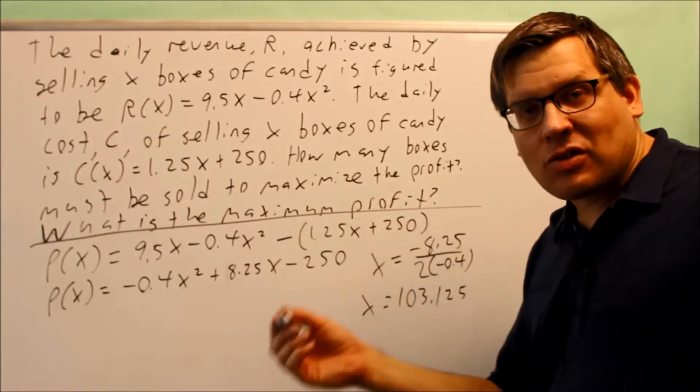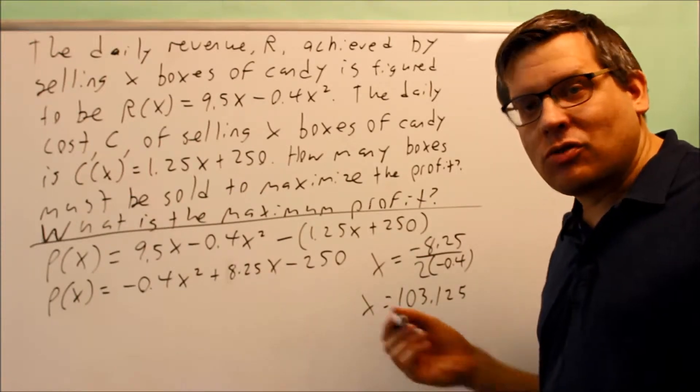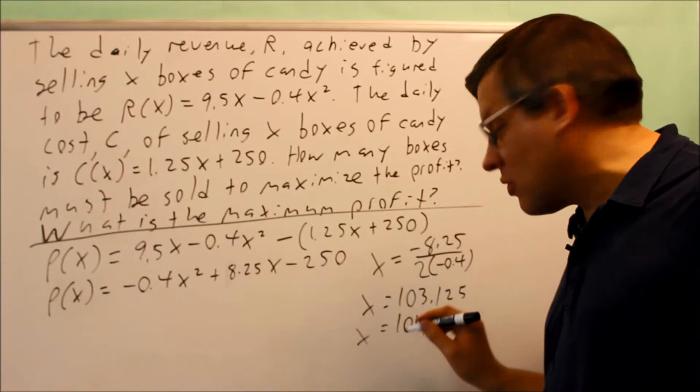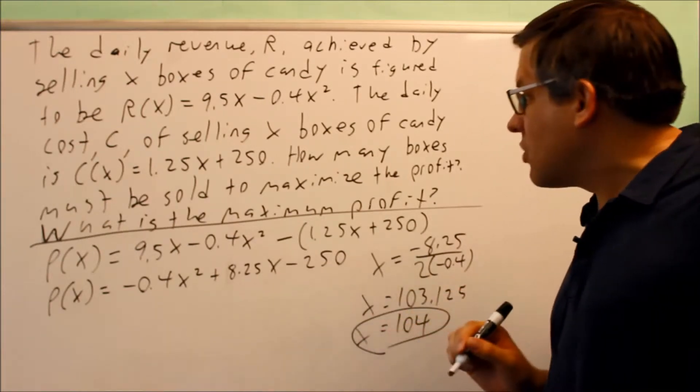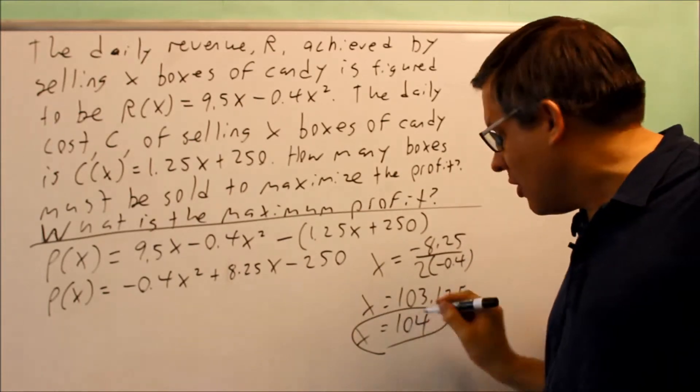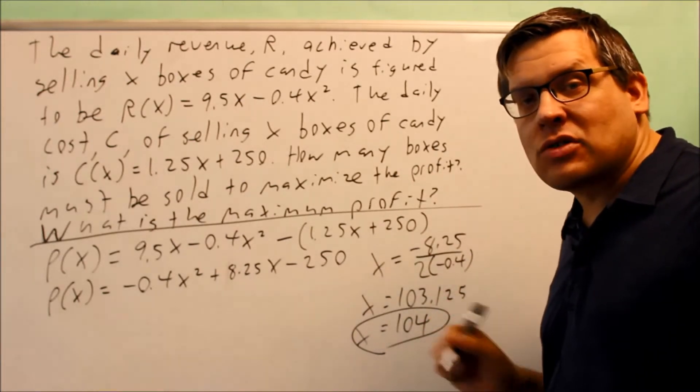Instead I want to bump it up to 104. I need to sell at least one more box to reach my maximum profit, so x equals 104. That answers the first question: how many boxes must be sold to maximize the profit? We've got to sell 104 boxes to maximize it.